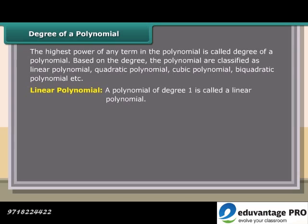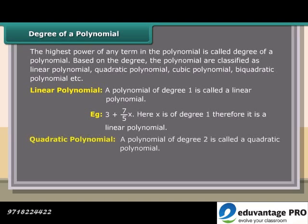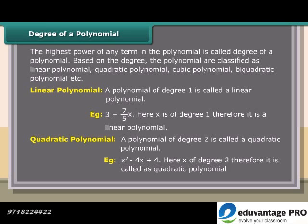A polynomial of degree 1 is called a linear polynomial. Example: 3 plus (7/5)x — here x is of degree 1, therefore it is a linear polynomial. A polynomial of degree 2 is called a quadratic polynomial. Example: x² minus 4x plus 4 — here x is of degree 2, therefore it is a quadratic polynomial.